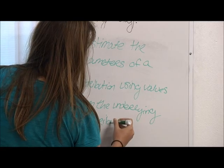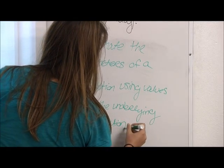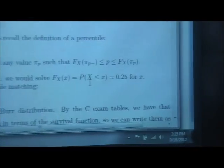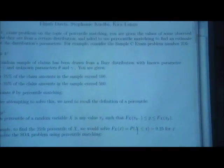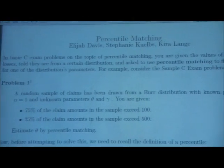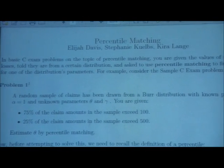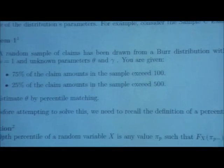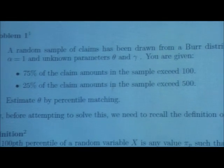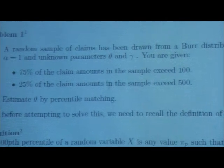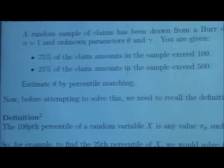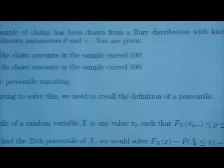Now let's consider a sample problem. In problem one here, we're given that there's a random sample of claims drawn from a Burr distribution with known parameter alpha equals 1 and unknown parameters theta and gamma. We're given that 75% of the claim amounts in the sample are greater than 100 and 25% are greater than 500. We want to estimate theta by percentile matching. So before we get into solving the problem, we should think about the definition of a percentile.